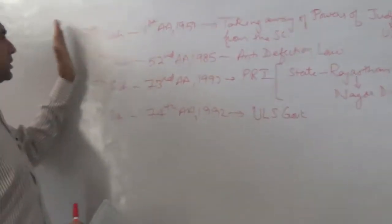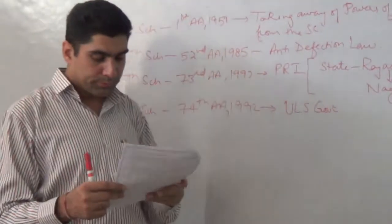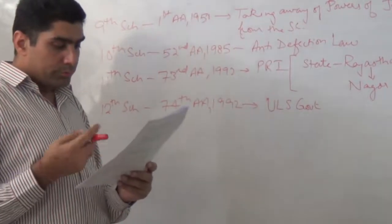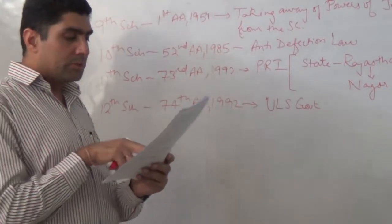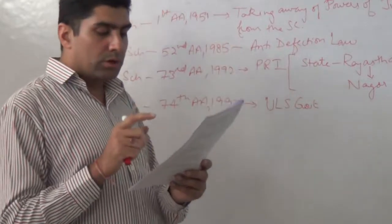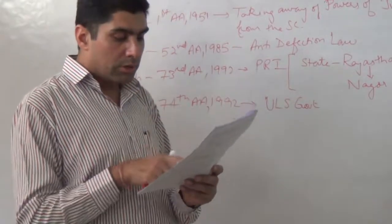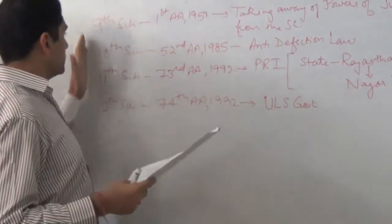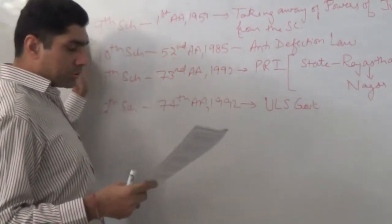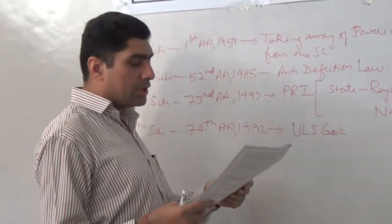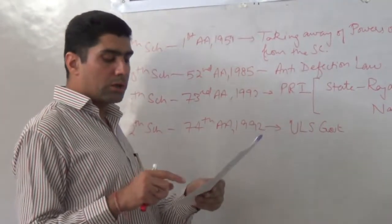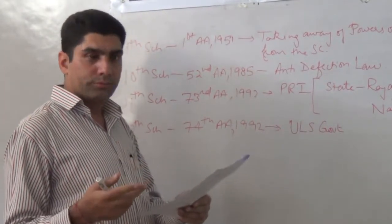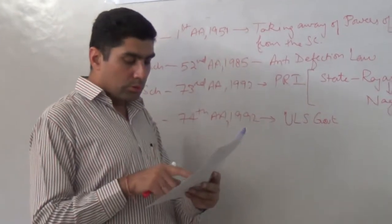Yeh 4 jo schedules hain, yeh baad mein add kiye gaye hain. In statements mein se, which one amongst the following is the correct one? Correct kaunsi hai? Only three options are correct — yeh option theek hai, yeh option theek hai, yeh option theek hai.